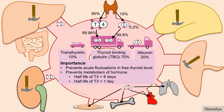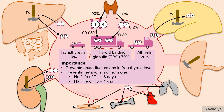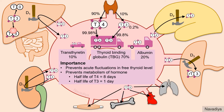T4 is converted to T3 by three types of deiodinase enzymes. D1 is present in liver and kidney and produces T3 utilized by various tissues. Brain and pituitary take T4 and convert it into T3 locally by D2. Placenta has D3, which produces RT3. Eventually, hormones undergo final metabolism by further deiodination to form tyronine, and some undergo conjugation and are excreted by the hepatic route.